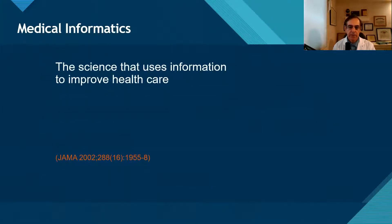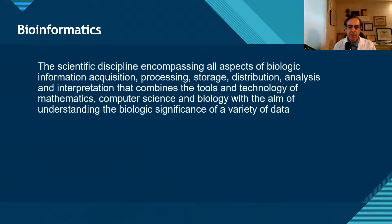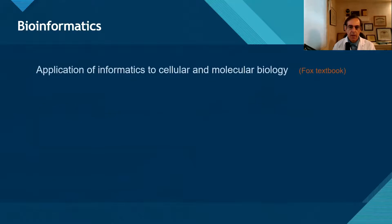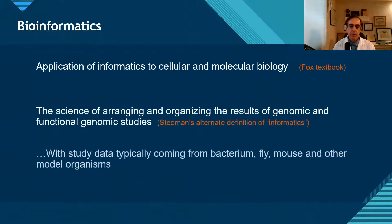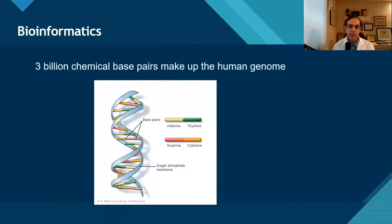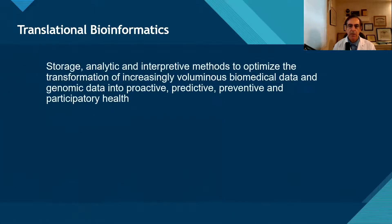Very simply, here's a definition from an article in JAMA that says: the science that uses information to improve healthcare. Bioinformatics is a subset of healthcare informatics — this is the science focused on the human genome and studying the big data related to pharmacogenomics. It's really all about the 3 billion chemical pairs that make up the human genome. This is different from pharmacy informatics. An offshoot involves pharmacogenomics and personalized medicine.